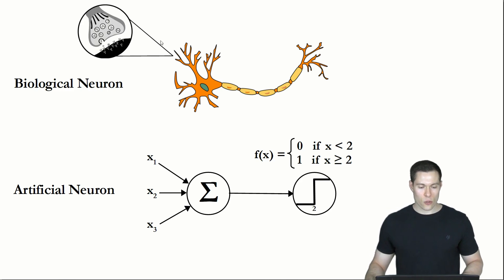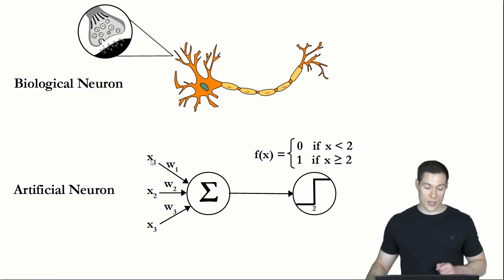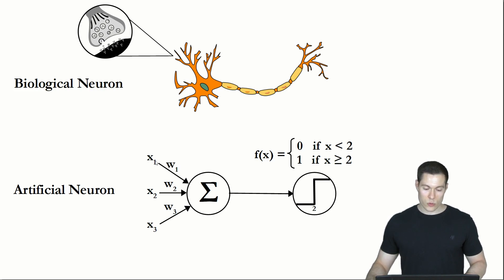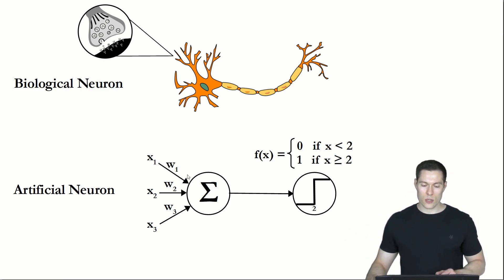To represent synapses, we multiply each input value by an individual weight. If the weight is between 0 and 1, the input gets weakened; if greater than 1, it gets amplified. If the weight is negative — representing an inhibitory synapse — the input value becomes negative, reducing the sum and making the neuron less likely to reach its threshold level. This is how we mathematically model our biological neuron.